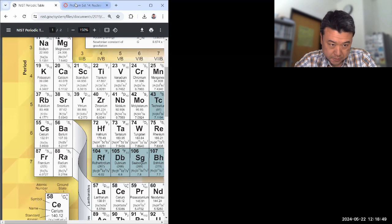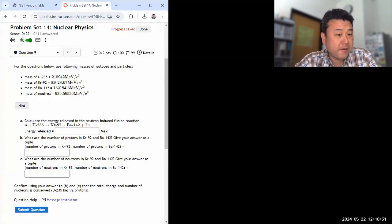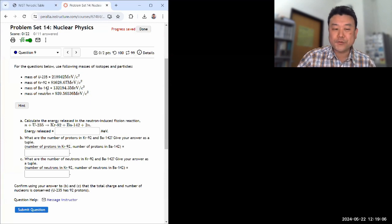So barium has 56 protons, which tells me if I need to figure out number of neutrons, it has, I want to say, 86 neutrons. Wow, that's a lot, yeah, that is a lot. So I'm pretty sure barium-142 is not stable, but for however long it exists, that's the mass it is.